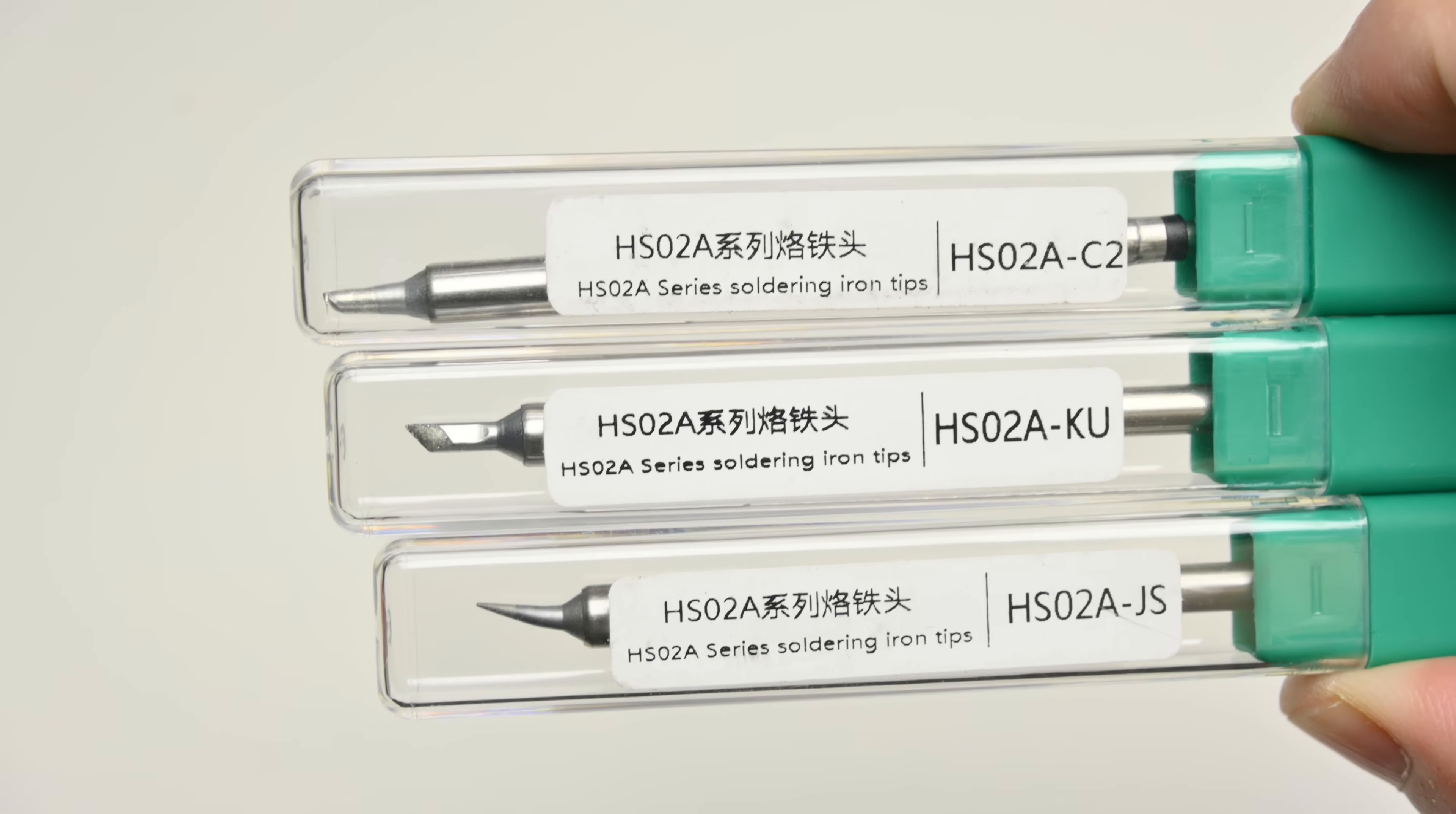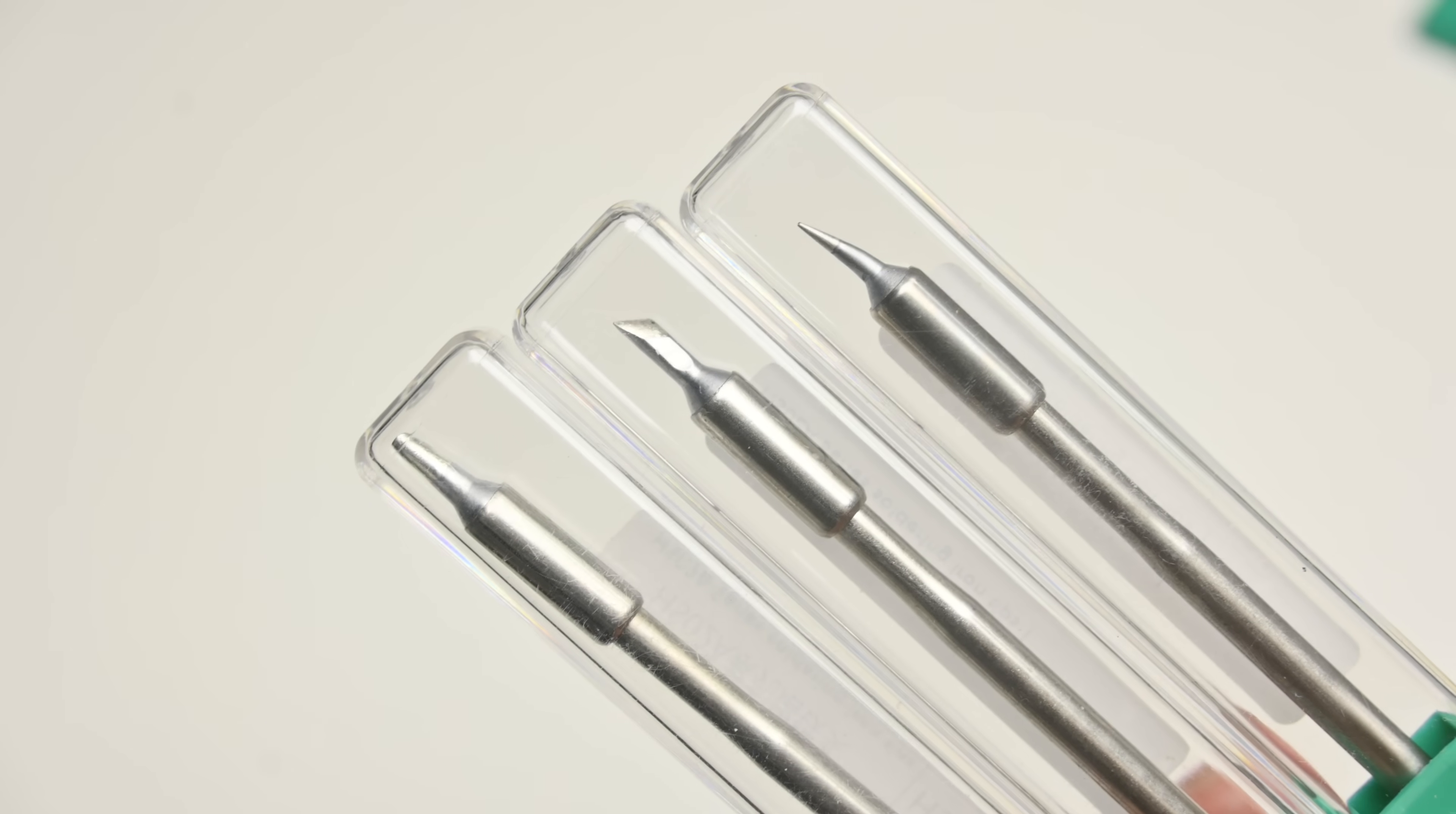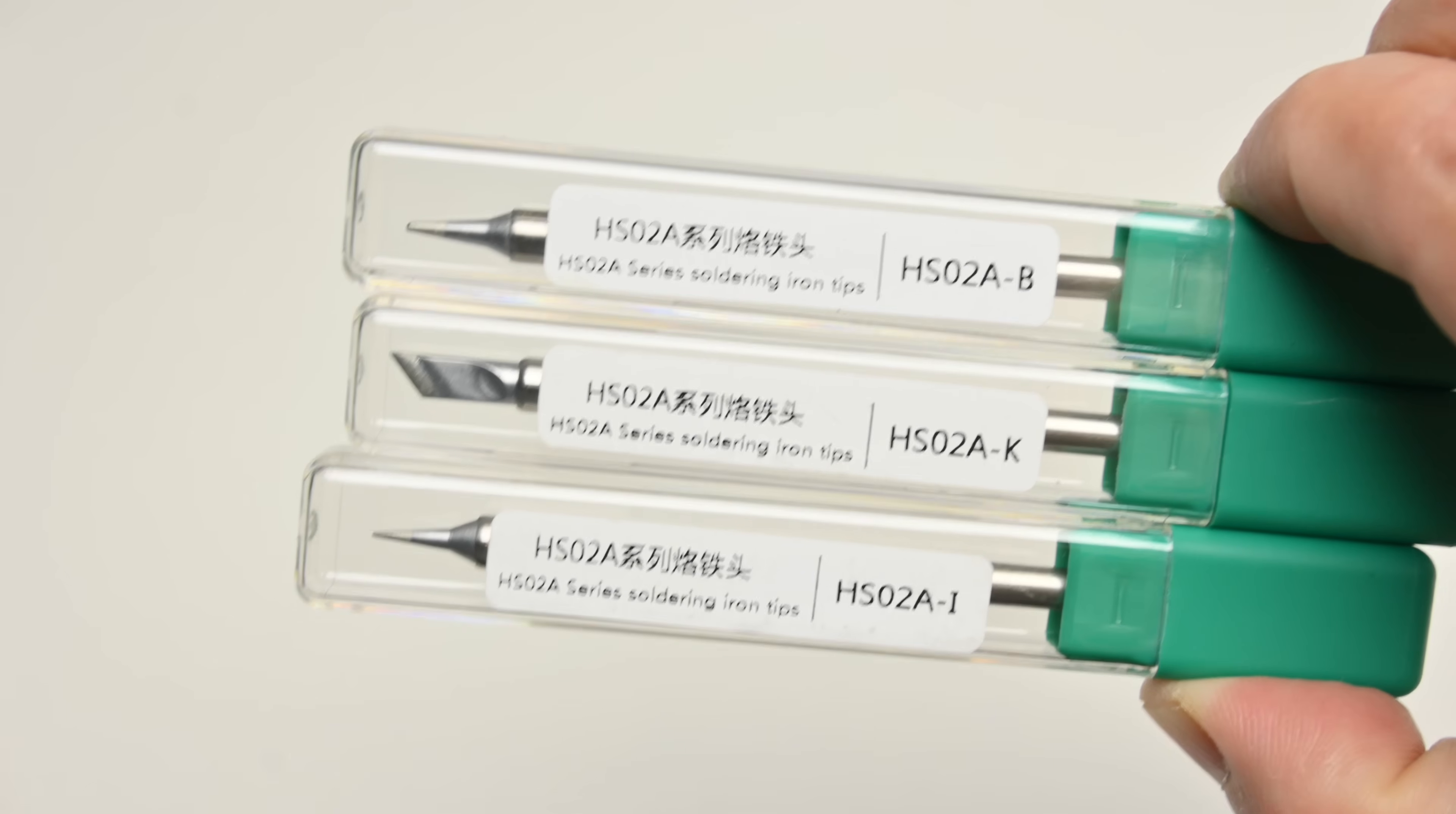And now let's have a look at the tips for the F245 handle. We're getting six tips in total. Here are the first three: we have a C2, KU and JS and this is what they look like. Then we're getting another three tips labeled B, K and I.